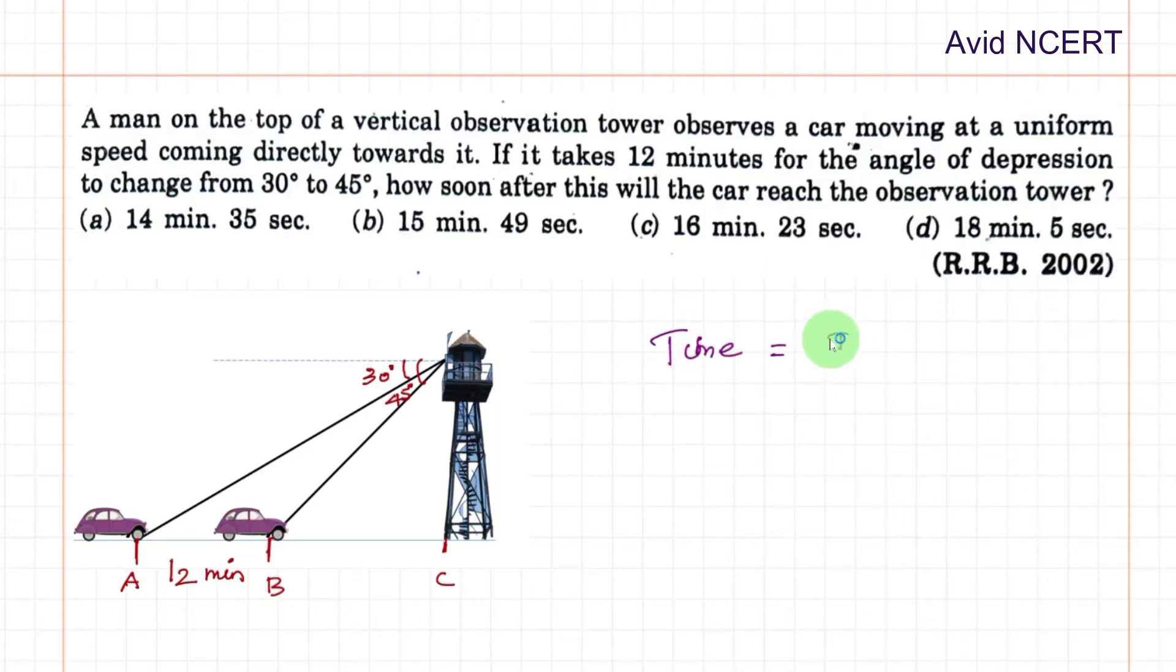The formula we know for time is distance by speed. Easy way to remember this: D equals distance equals speed into time, therefore time equals distance by speed. And let this be the height of the tower.